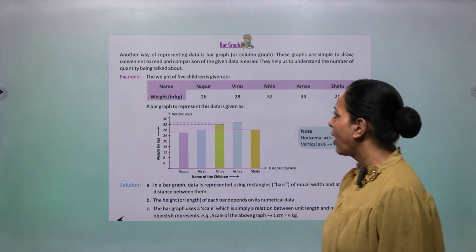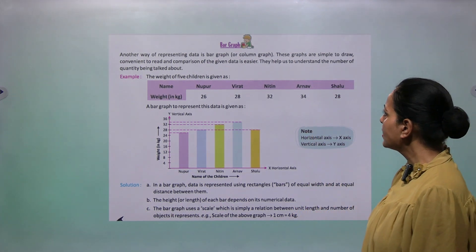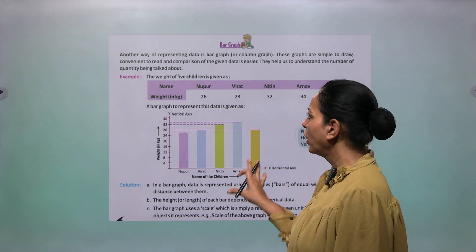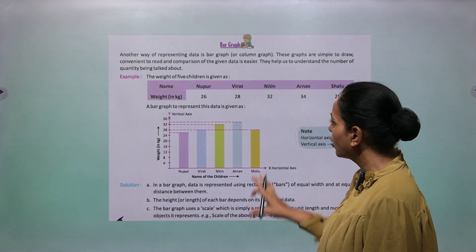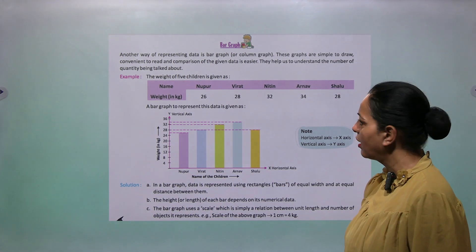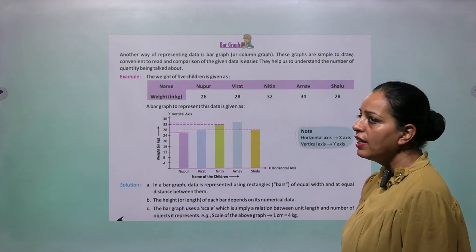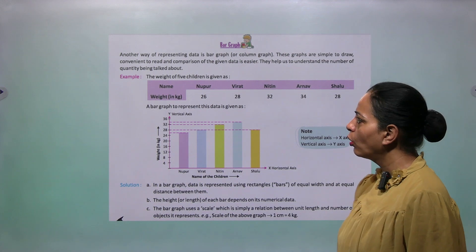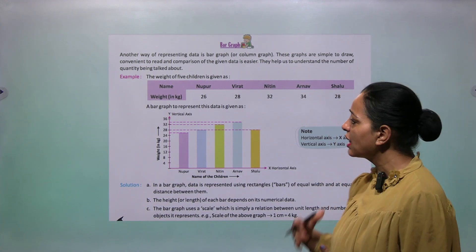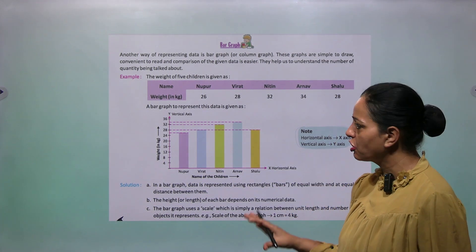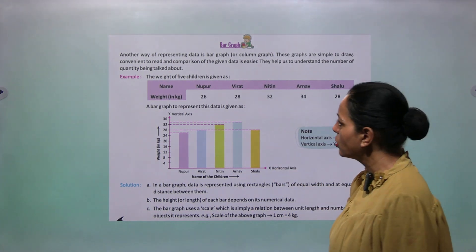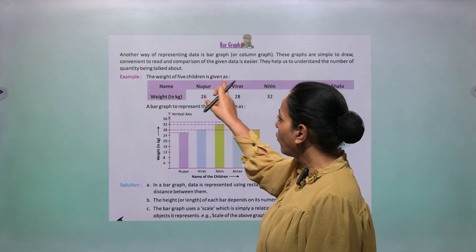Now I am telling you about bar graph. It's very interesting. Another way of representing data is bar graph or column graph. These graphs are simple to draw, convenient to read, and comparison of the given data is easier. They help us to understand the number or quantity being talked about. It's very much clear from these graphs.